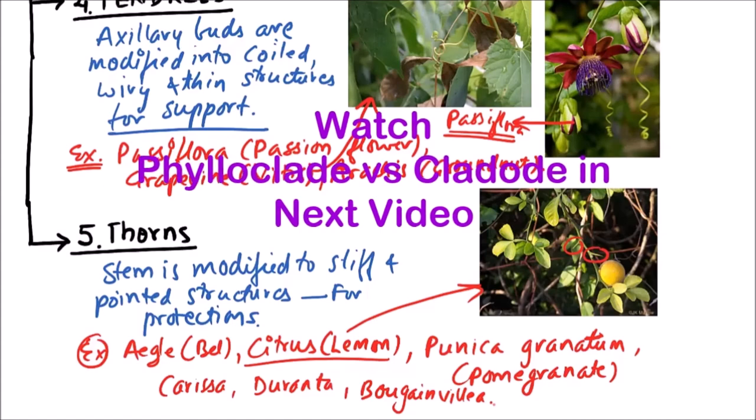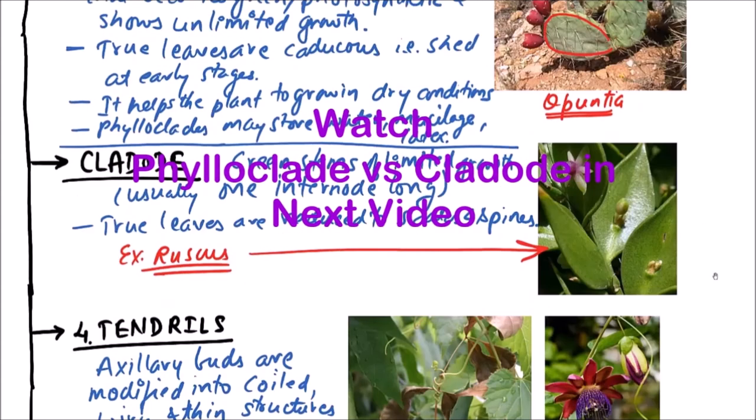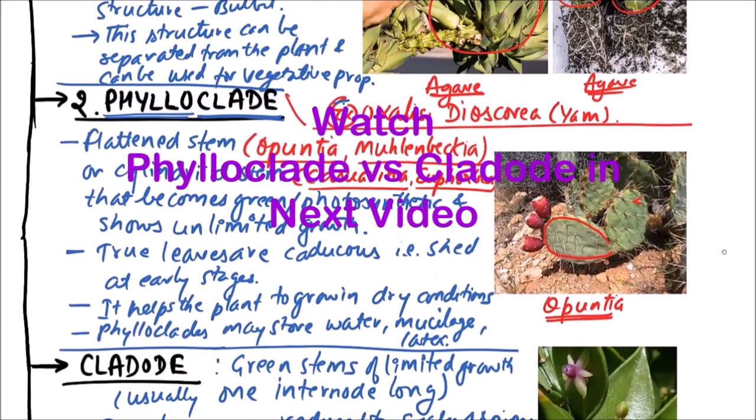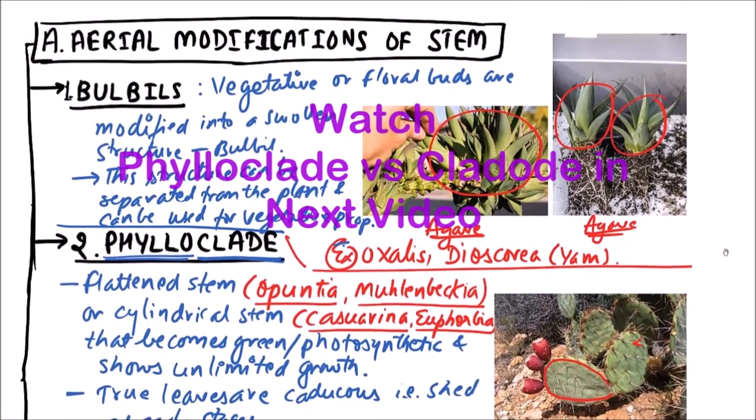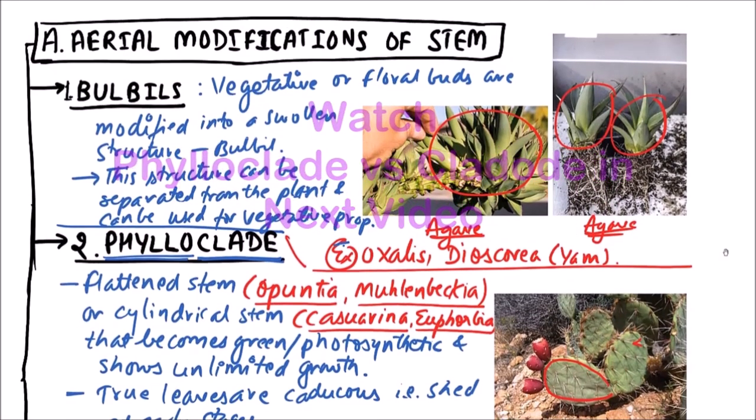So these are the various types of modifications of a stem in aerial category that is aerial modification of the stem.